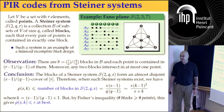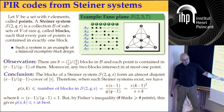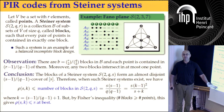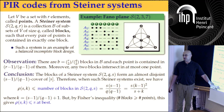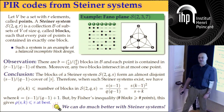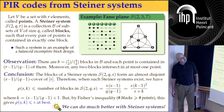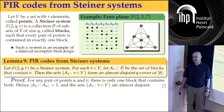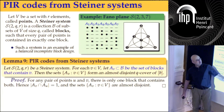The results using Steiner systems directly are extremely disappointing. By Fisher's inequality, the redundancy you get means storage overhead of at least two — which is not what we want. So we have to be a little bit more clever. We take the same Steiner system but now the points will be the blocks — we turn it around, and then it works.